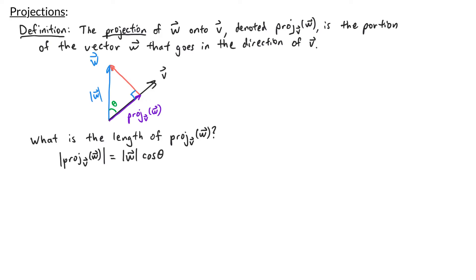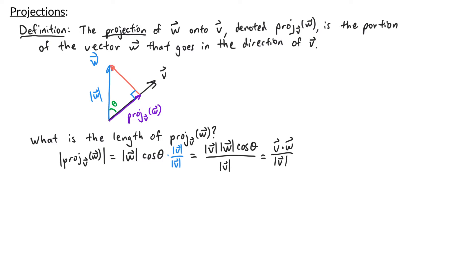The right side of this equation looks almost like the equation for the dot product of v and w. What's missing is the length of v. So what I'm going to do is multiply on the right hand side by the length of v divided by the length of v. Reordering some of the terms, we have the length of v times the length of w times cosine of the angle between them, divided by the length of v. From the theorem in our last video we know that the numerator can be rewritten as v dot w. So the projection of w onto v has length v dot w divided by the length of v.